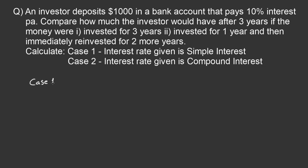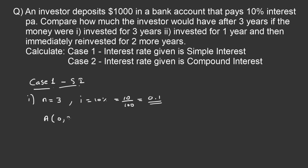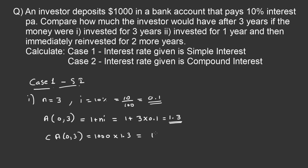We are going to calculate case 1: interest rate given is simple interest. Question 1 is invested for three years, so n equals 3, i equals 10%, which is 0.1. The accumulation factor a(0,3) for simple interest equals 1 plus n times i, that is 1 plus 3 times 0.1, which equals 1.3. The accumulated value is C times a(0,3), where C is 1,000, so 1,000 times 1.3 equals $1,300.